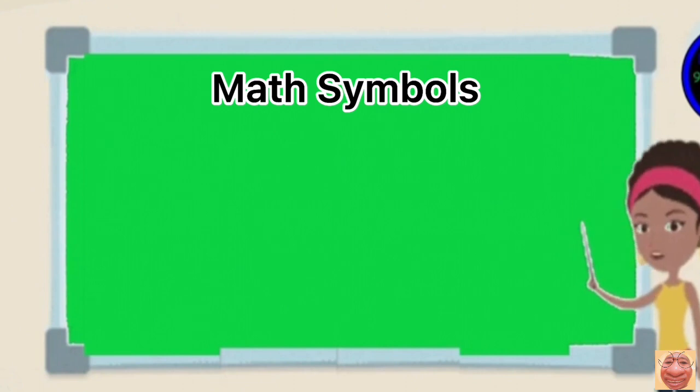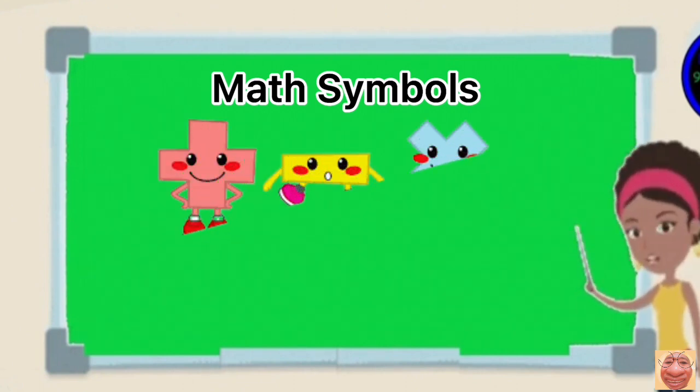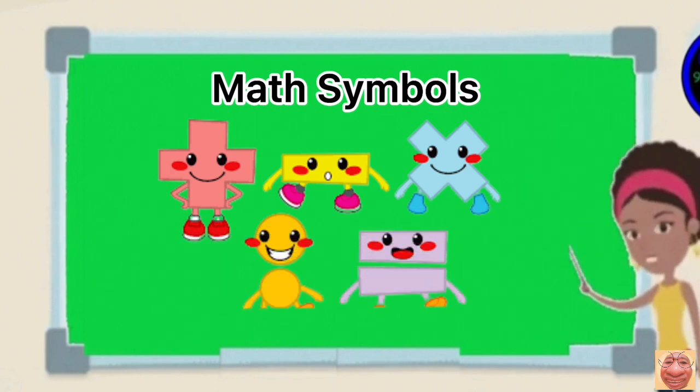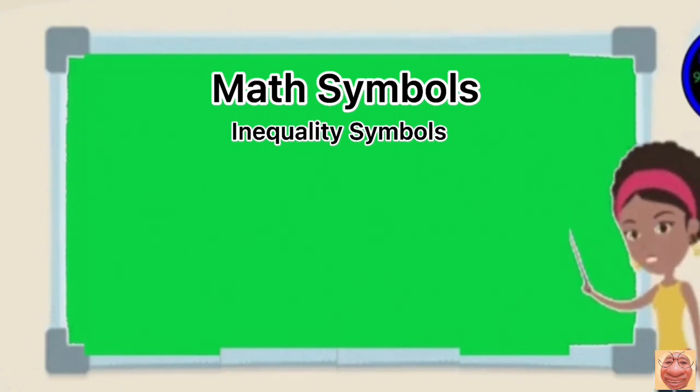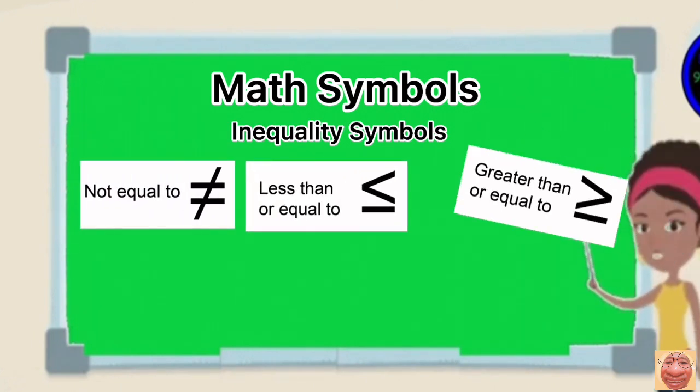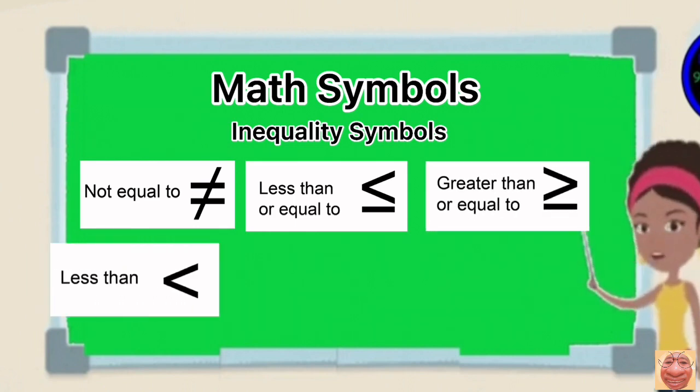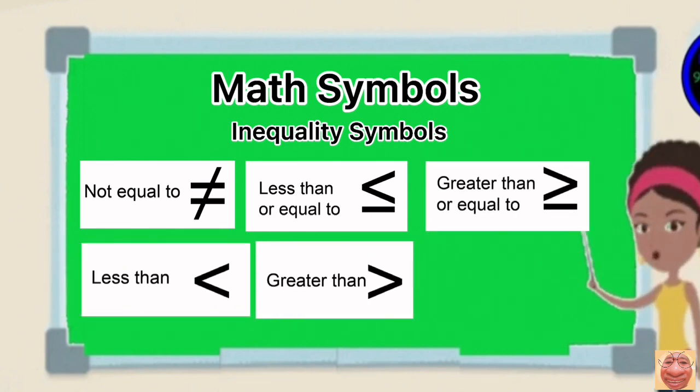The four fundamental symbols of operation, the plus, minus, multiplied by, and divided by. And, the inequality symbols, the not equal sign, less than or equal, greater than or equal, less than, greater than, and the equal signs.